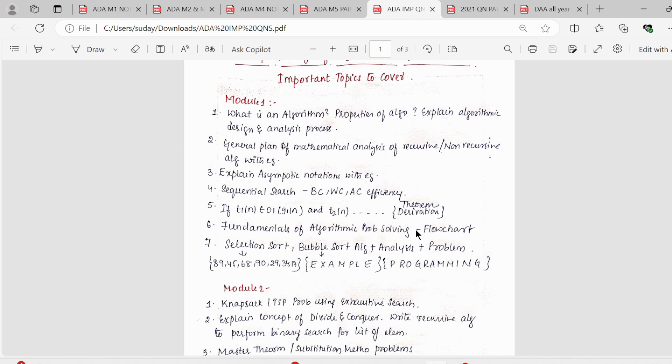Starting from the first module, first we have what is an algorithm, properties of algorithm and explain algorithmic design and analysis. Next we have the general plan for recursive or non-recursive - the five steps remain same here, you should write the same five steps. Along with that they can ask an example also, it could be factorial example or maximum element or there are many examples ahead.